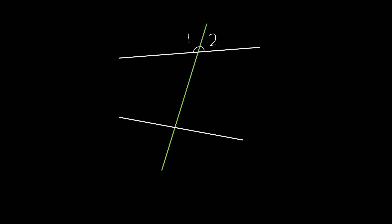Now we've seen a transversal line cross two parallel lines, but what about a transversal line crossing two intersecting lines? Does anything change? Well, no. Let's go ahead and find our eight angles. We have angle number one, angle number two, angle number three, angle number four, angle number five, angle number six, angle number seven, and angle number eight. So here are our eight angles.